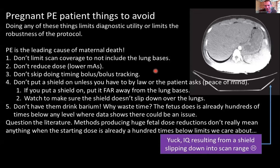Here's a slide I put on Twitter to explain what you really shouldn't be afraid of and what you should be doing for a proper CTPA protocol. Doing any of these things limits diagnostic utility: don't change scan coverage to exclude lung bases; don't try to lower the MAS; don't skip a timing bolus run — PE is one of the hardest things to time, and if you miss the timing, you may have to redo the PE scan. Don't put lead shielding on unless required by law. If you are forced to use it for regulatory purposes, put it far away from the lung bases.